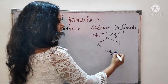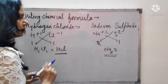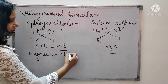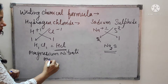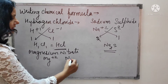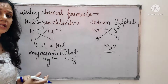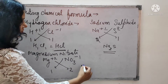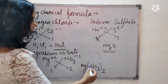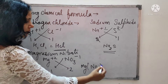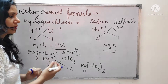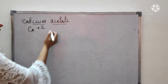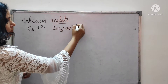For magnesium nitrate: magnesium is +2 and nitrate is NO3−. Nitrate is a polyatomic ion. Now for the next example, acetic acid's acetate ion is a polyatomic ion written as CH3COO− with a valency of 1.